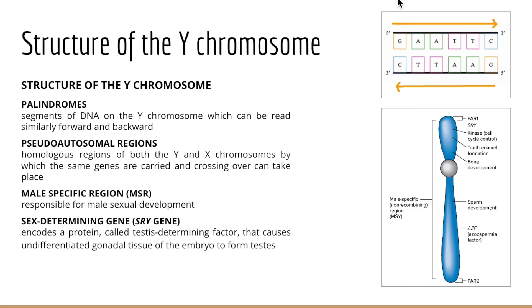Although the X and Y chromosomes aren't generally homologous as our 22 autosomes are, they can pair together because they are homologous in very small regions called pseudoautosomal regions — PAR1 at the tip of the short arm and PAR2 at the end of the long arm. In humans, the X and Y chromosomes carry about 60 genes in these pseudoautosomal regions encoding for shared functions between X and Y: bone growth, cell division, and immunity. These regions allow for crossing over at just those tips.